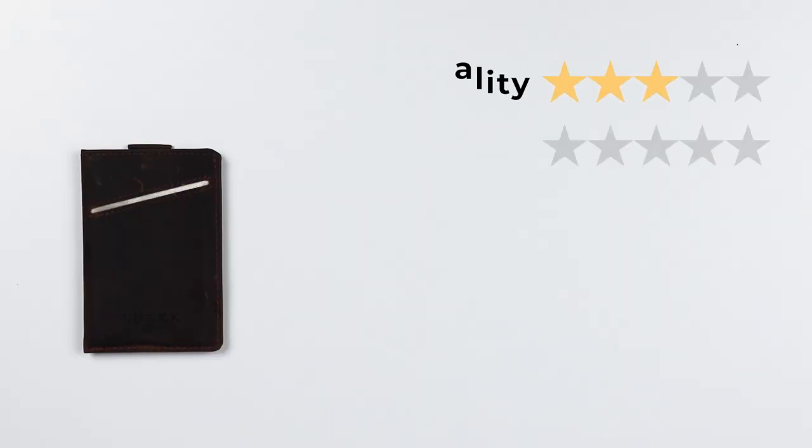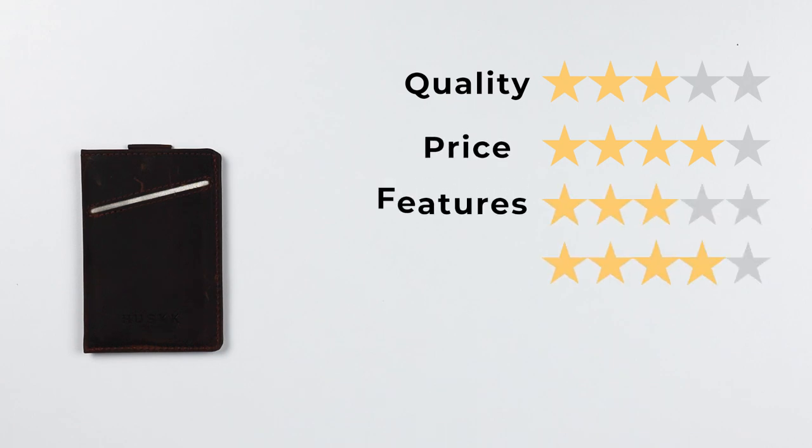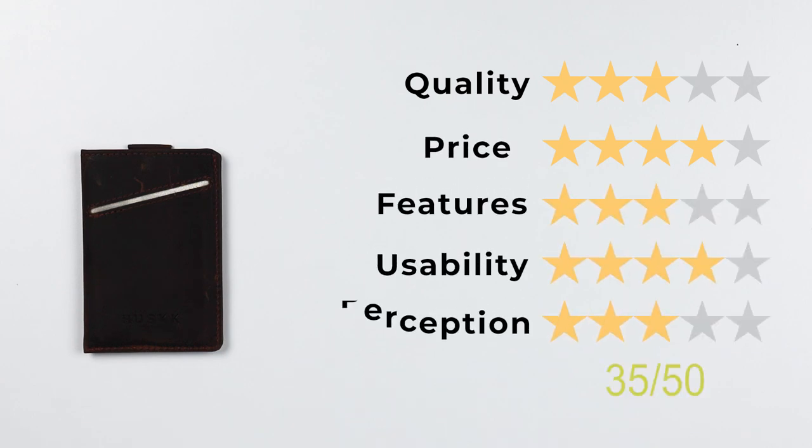So now, let's get into the final score. For quality, three. For price, a four. Features, three. Usability, a four. And perception, a three. That gives us a final score of 35 out of 50.